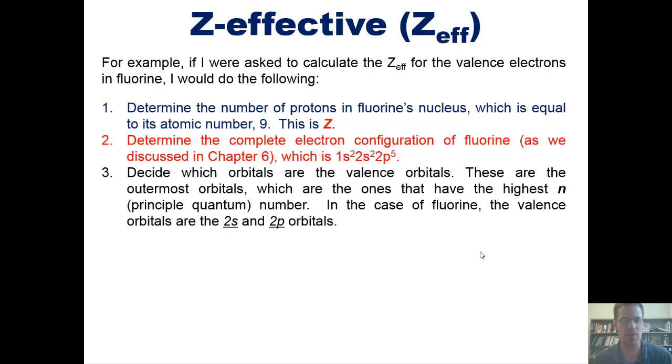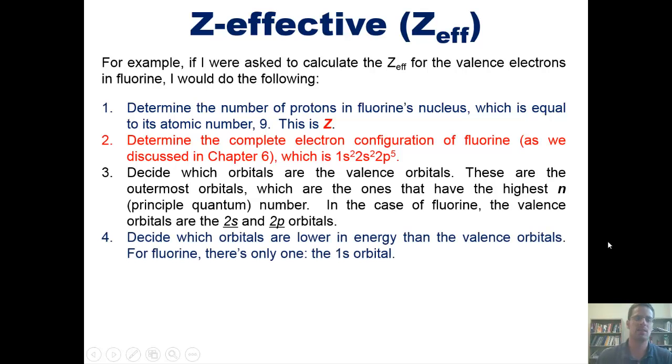Those are the valence orbitals because they have the largest number, this 2, in front of each of them, which is larger than 1 for the 1s orbital. Four, decide which orbitals are lower in energy than the valence orbitals. For fluorine, there's only one lower energy orbital, the 1s orbital. That orbital, by the way, is the one that's closer to fluorine's nucleus and smaller than the 2s and 2p orbitals, which are further out.